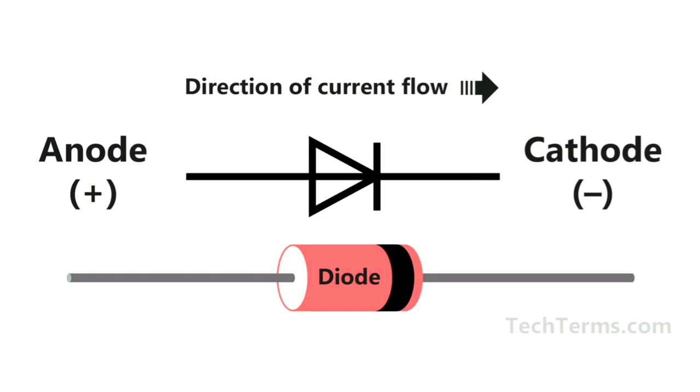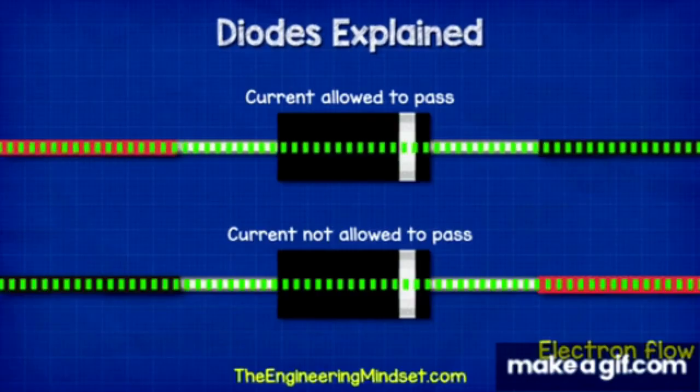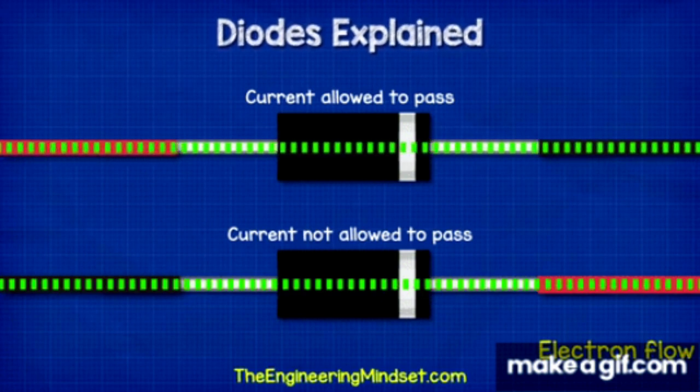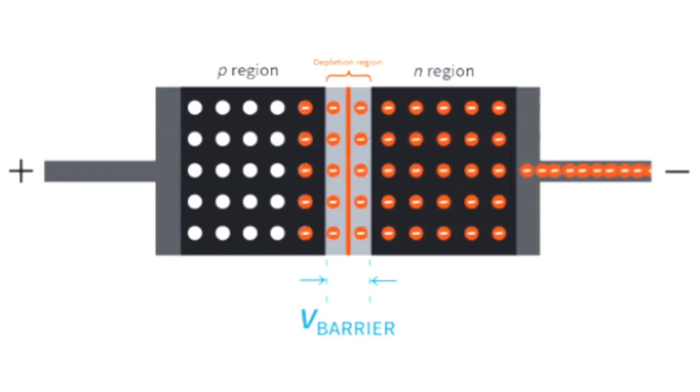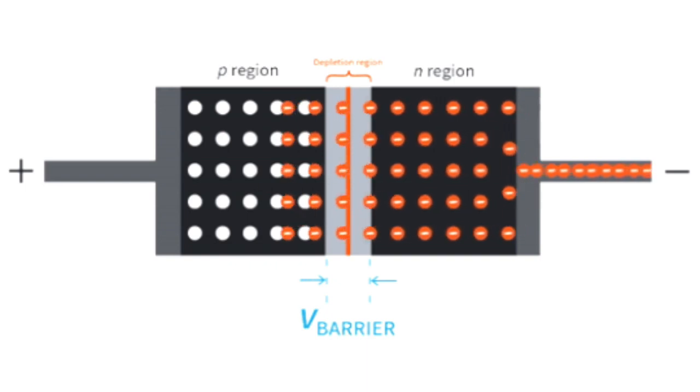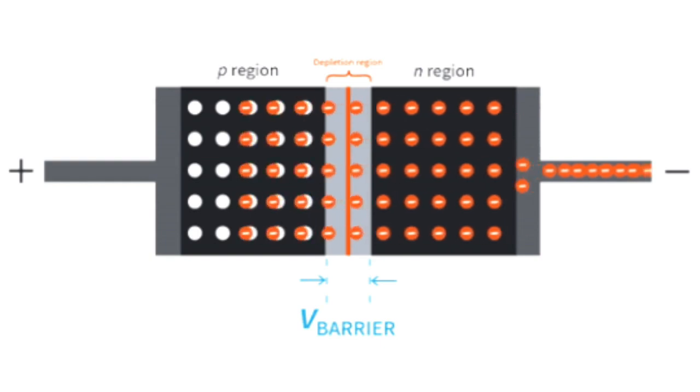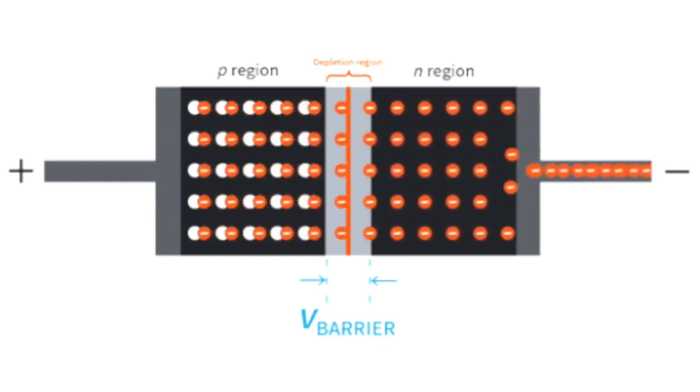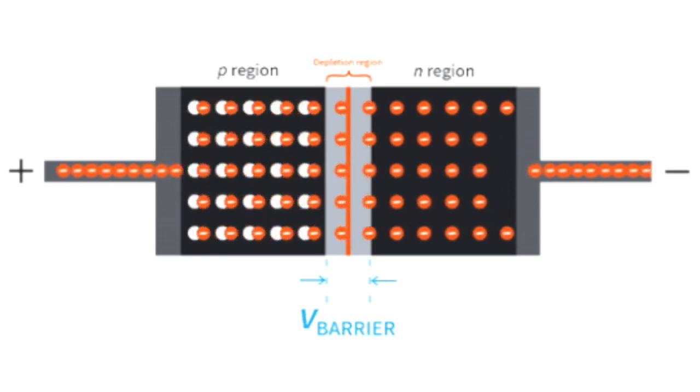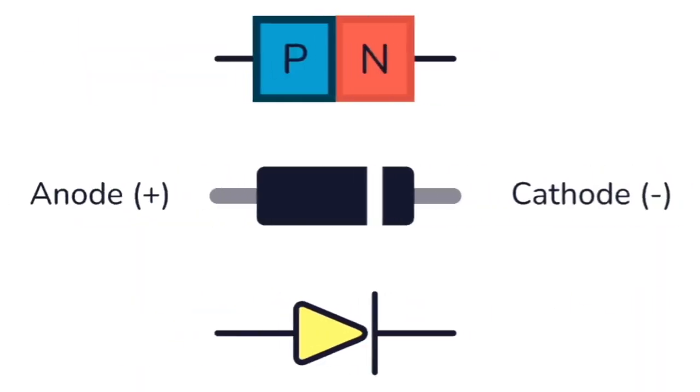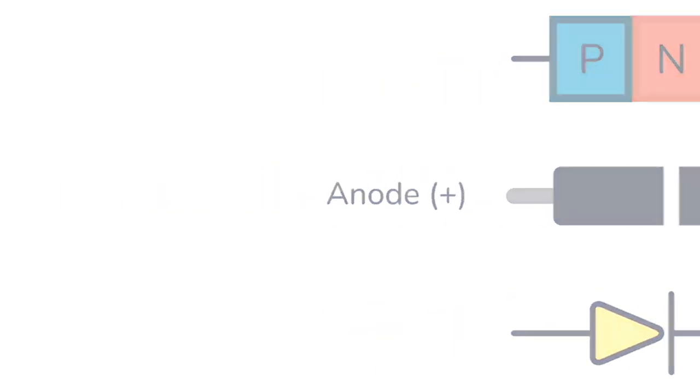On the other hand, when a diode is reverse biased, the positive terminal of the voltage source is connected to the n-type region and the negative terminal is connected to the p-type region (cathode). This reverse bias increases the potential barrier, making it difficult for majority charge carriers to move across the junction. As a result, only a very small leakage current flows through the diode in reverse bias, typically on the order of nano-amperes to micro-amperes.